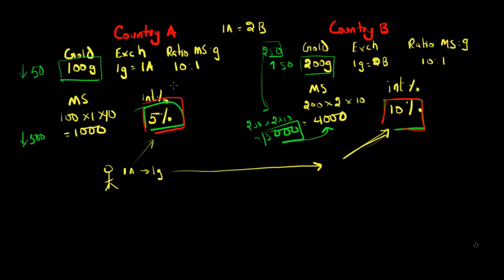In the last video, we talked about the consequences of having two countries that have their own currency be on the gold standard. The first implication is that it implies a fixed exchange rate between the two countries' currencies — in this example, one country A dollar was equivalent to two country B dollars. The second implication is that interest rates in the two countries have to be relatively similar; otherwise, there is an incentive for people to move gold from the lower interest rate currency to the higher interest rate currency. So the central bank has to make sure their interest rates are in line with those of other countries on the gold standard.